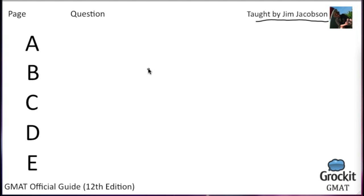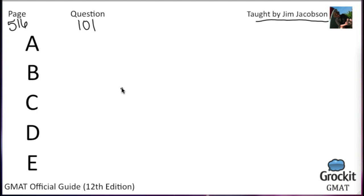Last time we were approaching the end of the critical reasoning section. I think we only have two broadcasts left on critical reasoning. Last time we finished with question number 100 on page 516, so that's where we're going to pick up — still page 516. Question number 101. As before, I will read the question out loud, go through the answer choices correct and incorrect, discussing what makes them right or wrong.